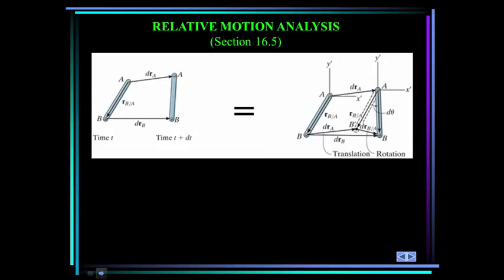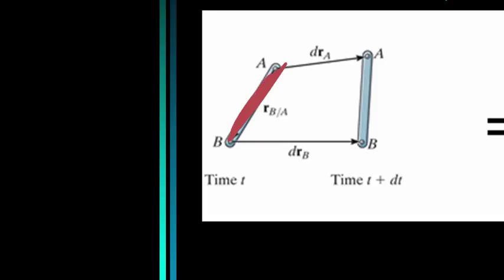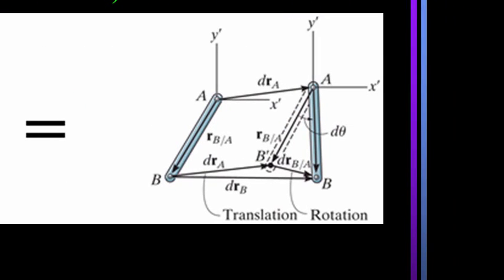When a body is subjected to general plane motion, it undergoes a combination of translation and rotation. Here you can see link A,B, and as time moves on, it moves to a new position — it's translated and rotated. This is equivalent to what you see on the right: link A,B in pure translation ends up at point A,B prime, and then rotation by some dθ causes it to end up in the final position A,B.